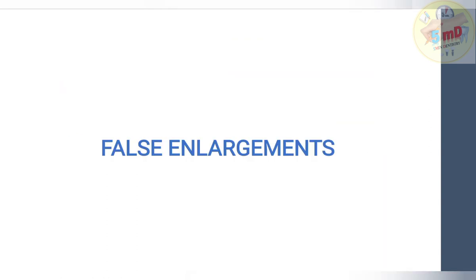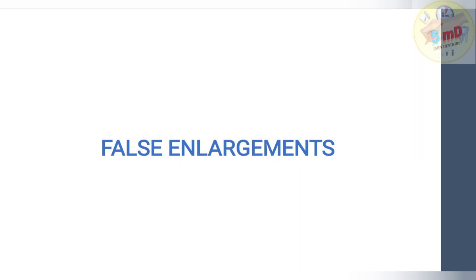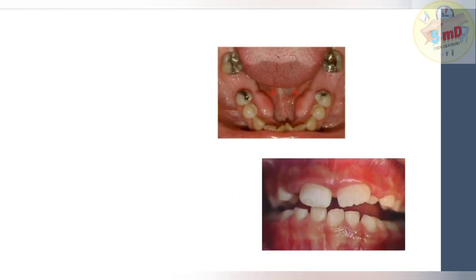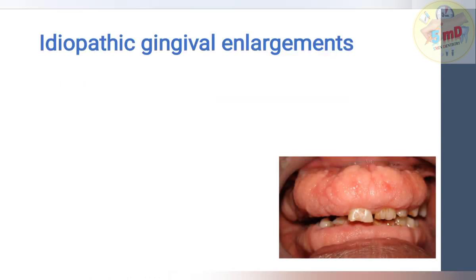False enlargements — the gingiva itself is not involved; rather, the underlying structure enlarges, making the gingiva appear big. Classic examples are exostosis or tori, and developmental enlargement. In both cases, the gingiva is not enlarged — it is the underlying bone or erupting tooth that causes the gingiva to look enlarged.